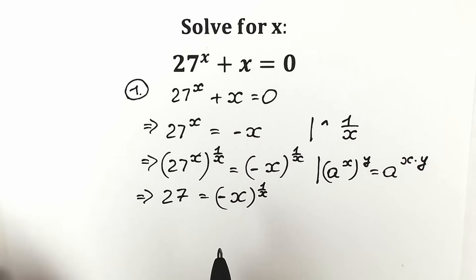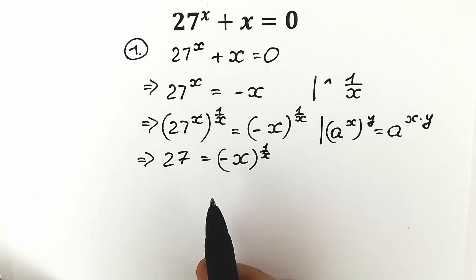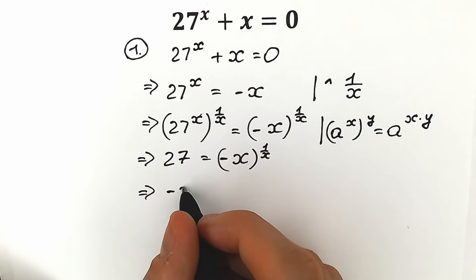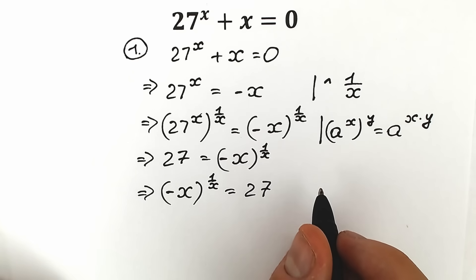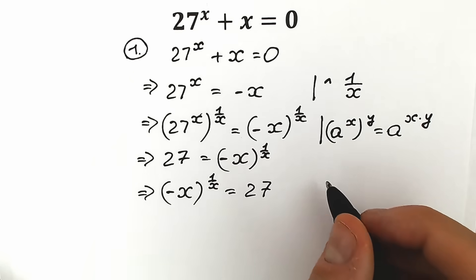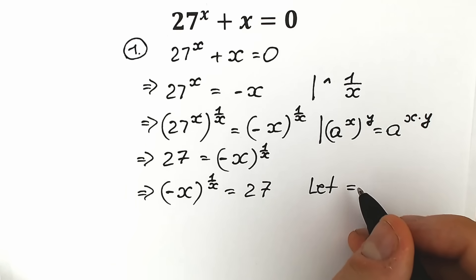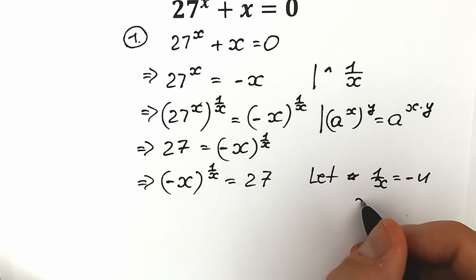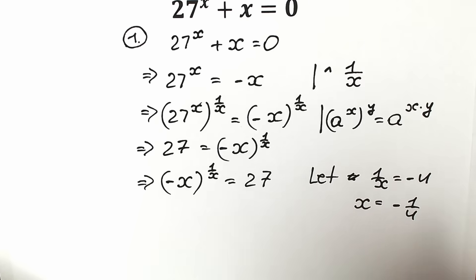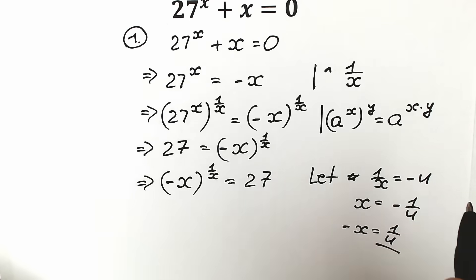A lot of students are confused about this part — how to find x. Let's write the expression with variables on the left side: minus x to the power 1 over x equals 27. Now I'll show a great substitution. Let 1 over x equal minus u, so x equals minus 1 over u, and therefore minus x equals 1 over u.